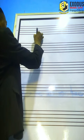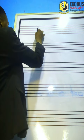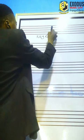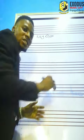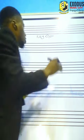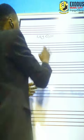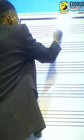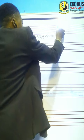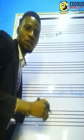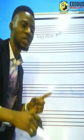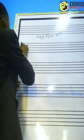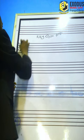Now let's construct the scale of G without key signature. The scale of G — key G has only one sharp, which is F sharp. Now let's construct the scale of G without key signature.